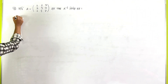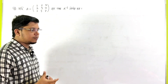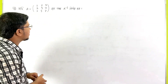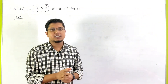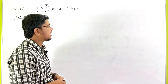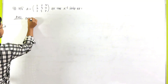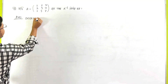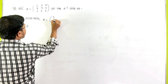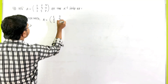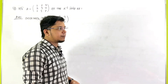We will start with the A-parit matrix. First of all, we have the A-parit matrix: 1, 2, 1, 2, 3, 5, 3, 4, 7.